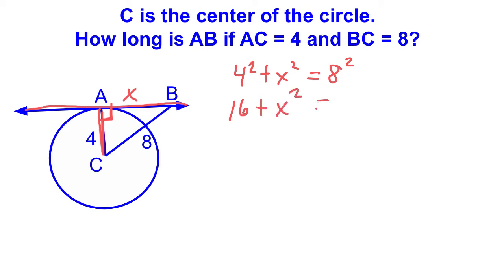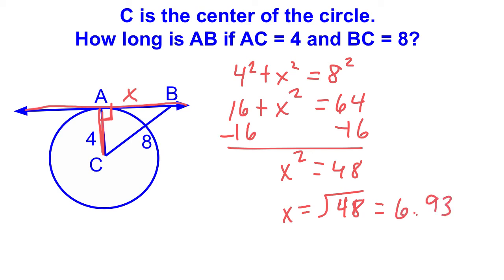Then I'm going to simplify so I get 16 plus x squared equals 64. Now I'm going to subtract 16 on both sides, so x squared equals 48. My last step would be to take the square root of 48, and I could simplify that to be 6.93.